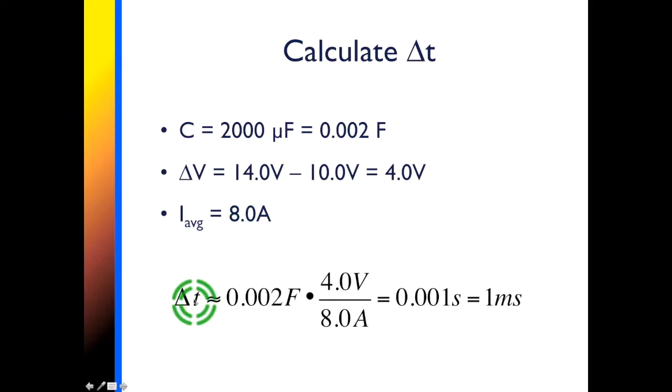And now we can calculate delta T, which was 0.002 farads times 4 volts over 8 amps, and that comes out to 0.001 seconds, which is 1 millisecond.